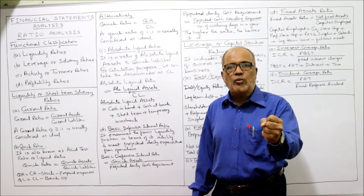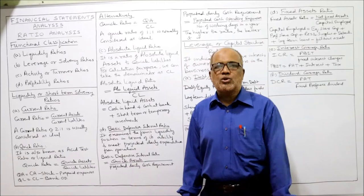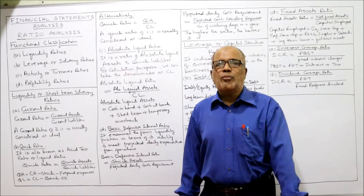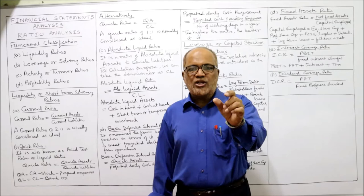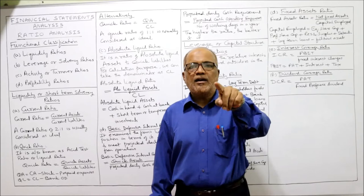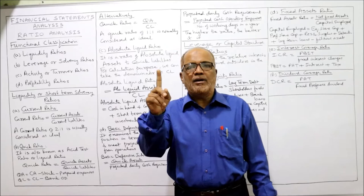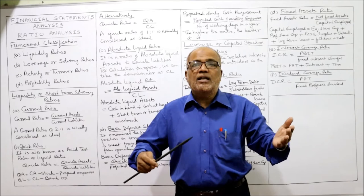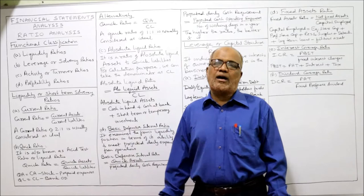Every business wants to find out its liquidity position — can we meet all our current obligations on time or not? If the liquidity position is bad, no creditor will supply goods and no banker will extend a loan, so the business credit worthiness will come down. The liquidity position should be sufficient. For calculating liquidity, four ratios must be remembered. The first ratio is current ratio.